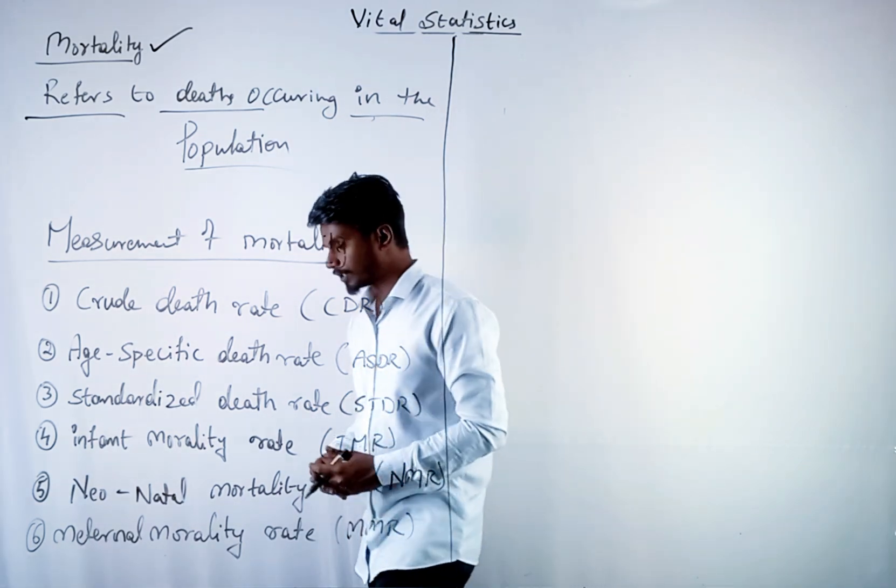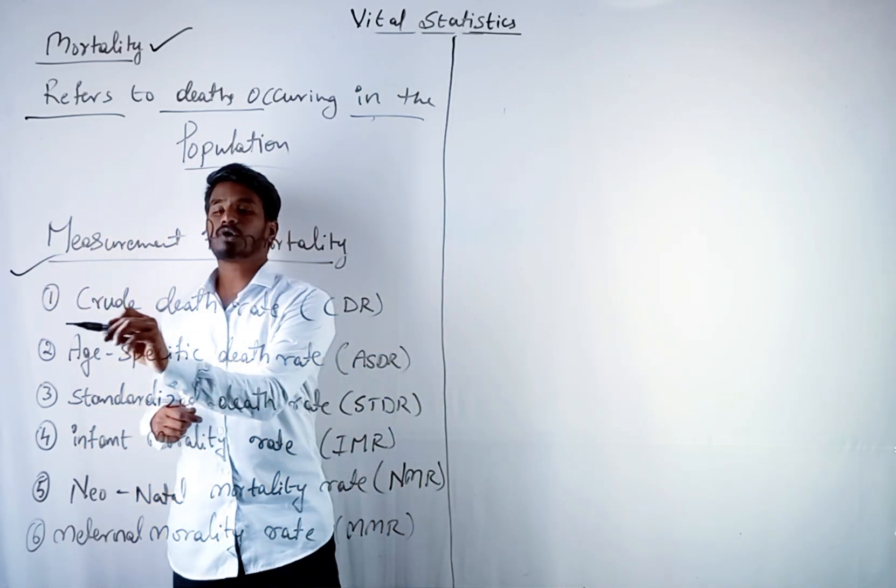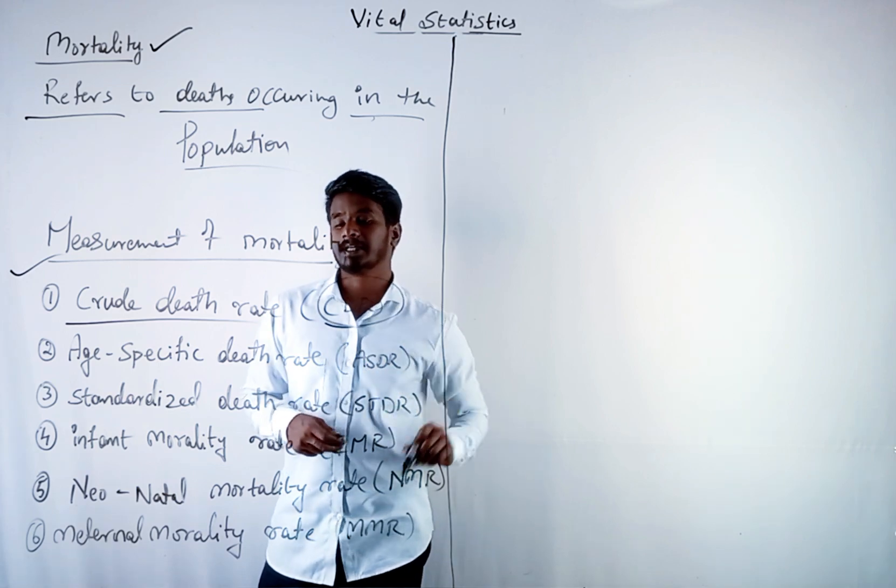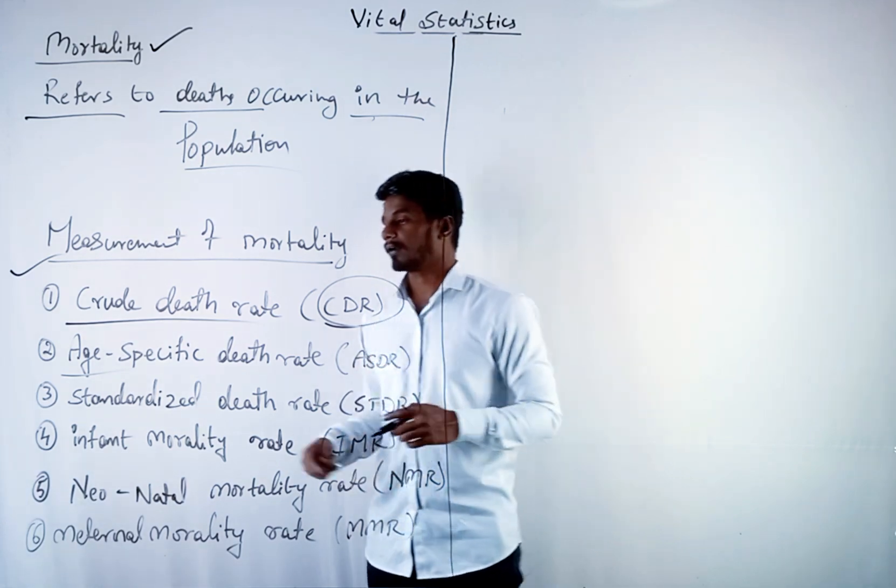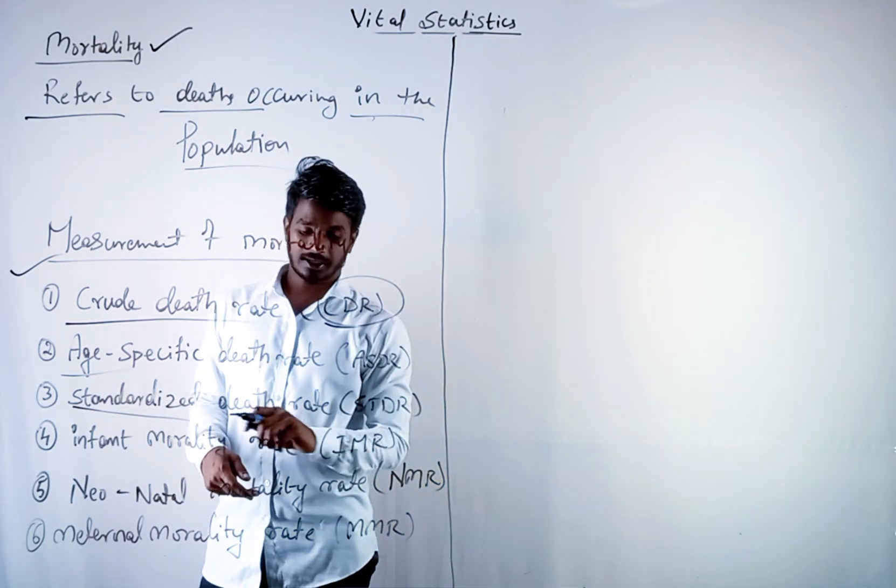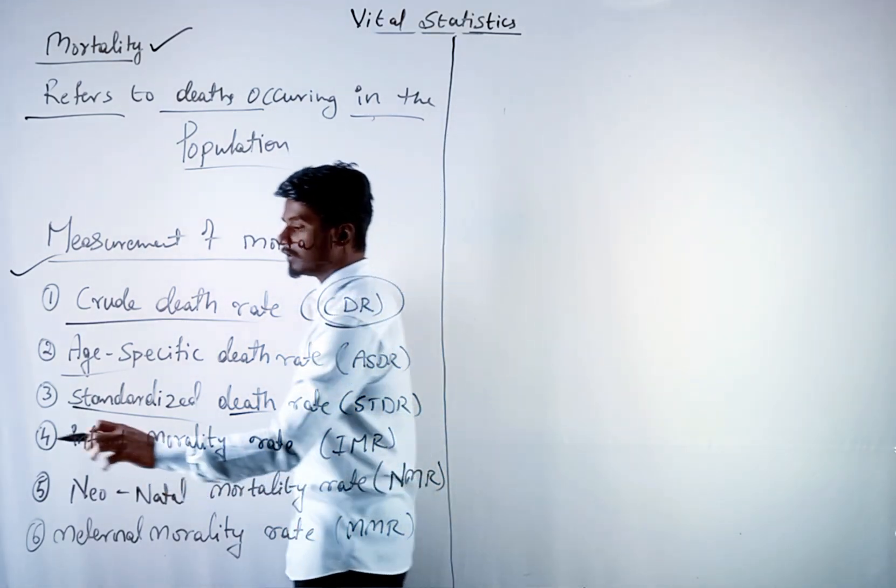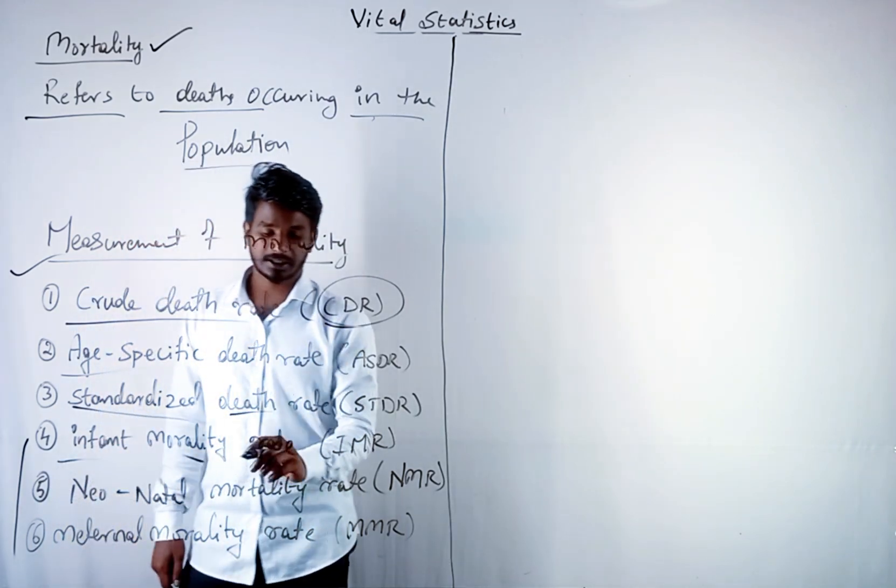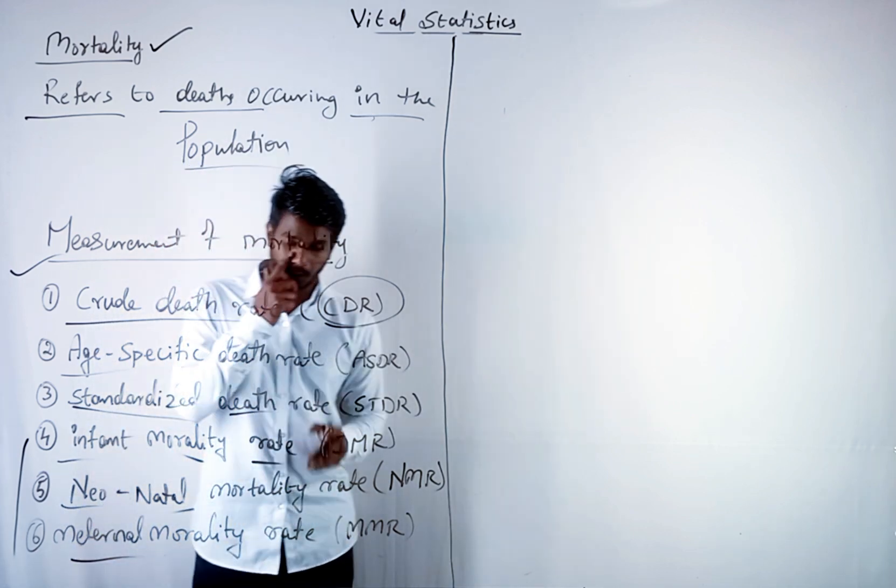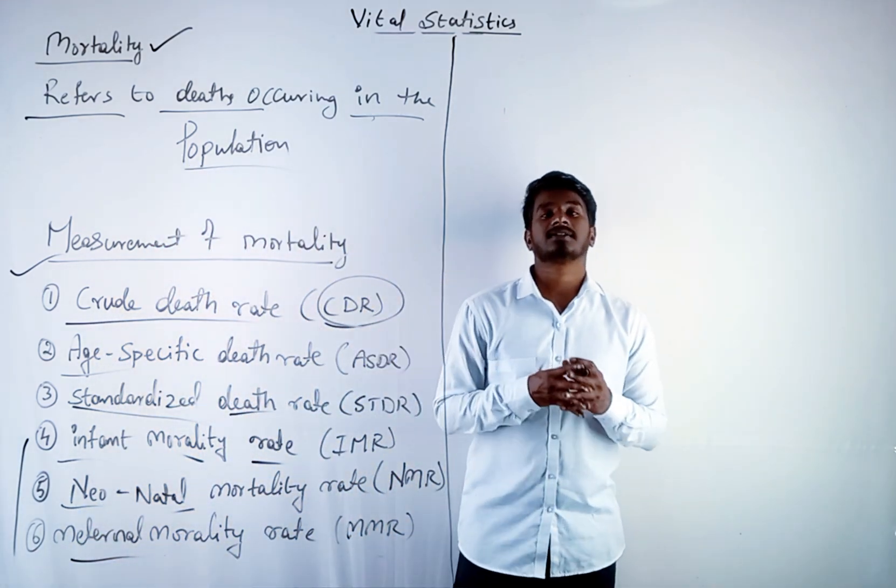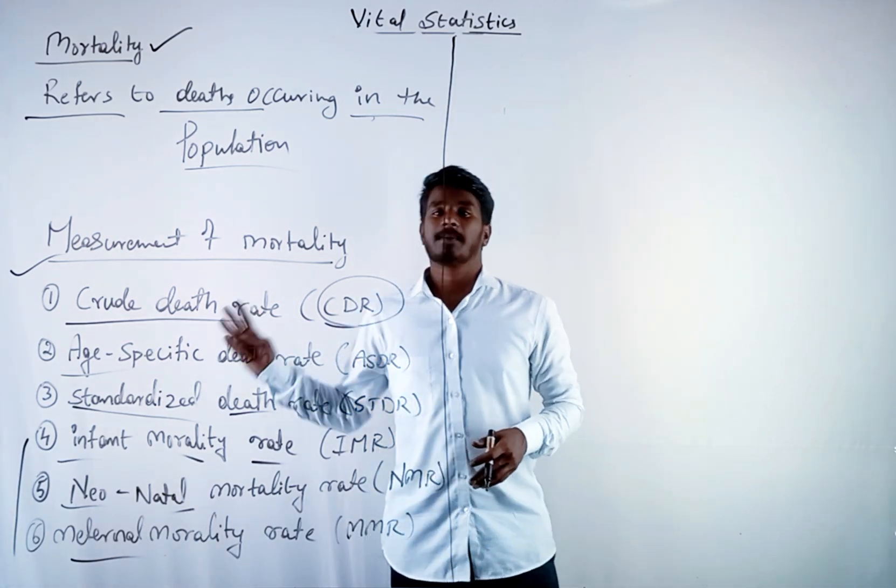Let us see measures of mortality. The first one is crude death rate CDR and age-specific death rate ASDR, then standardized death rate STDR. Next we have three small topics: infant mortality rate, neonatal mortality rate, and maternal mortality rate. Let us understand these things by taking a question.